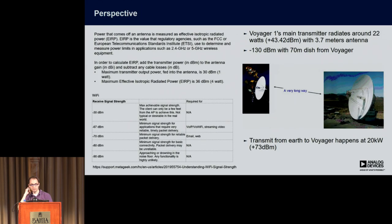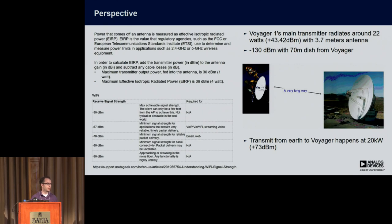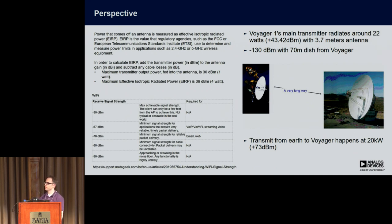To put that in perspective: if you take Voyager, which is really far away at this point, it has a 22-watt transmitter — so it transmits at 42 dBm — with a 3.7-meter dish. From Earth, that shows up at -130 dBm, and to get that you need a huge dish — a 70-meter dish. This just kind of puts in perspective the sensitivity of the device. Looking at it the other way, you need a lot more transmit gain to talk to Voyager, where you're blasting 20 kilowatts, which is absolutely insane.